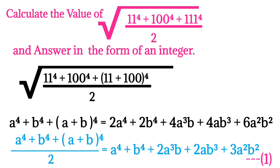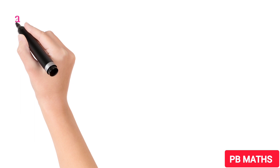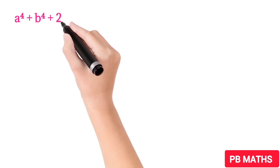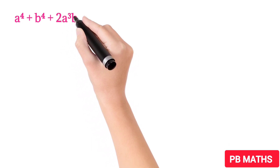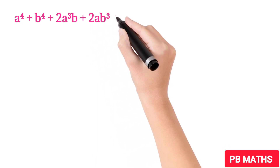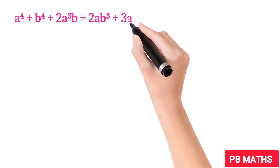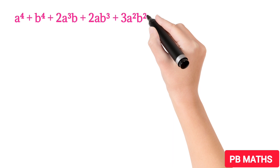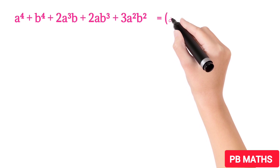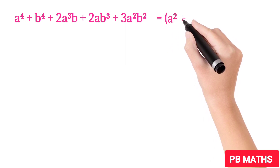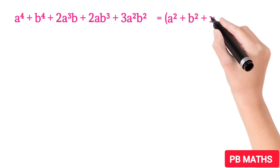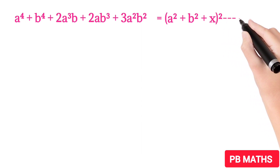Now let's take the right-hand side of equation 1. There we have terms a to the power 4 and b to the power 4. These terms suggest that there should be a² and b² terms in the square. So let's write the right-hand side of equation 1 as a perfect square: a⁴ plus b⁴ plus 2a³b plus 2ab³ plus 3a²b² equals (a² plus b² plus x) whole squared. Let's call this equation 2.